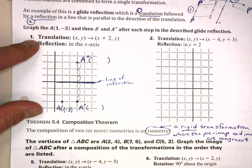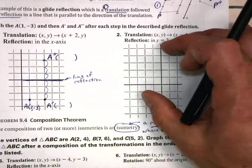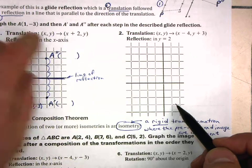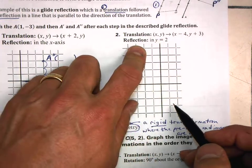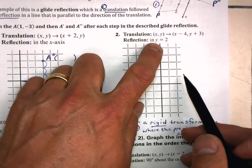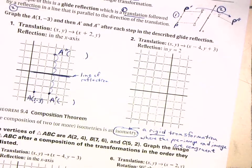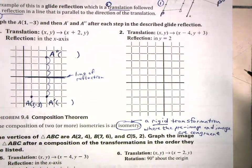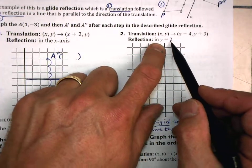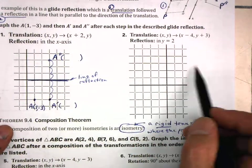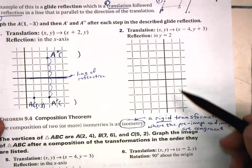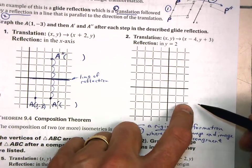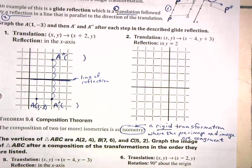That's it for this problem. Do the same type of work for number two. Plot point A at (1, -3), then do this rule of transformation — it's a translation — and then reflect that A' in the line Y equals two. Do you remember what Y equals two looks like? You need to pull out that half sheet of paper with the four different lines of reflection. Remember, Y equals two is a horizontal line. Draw your line of reflection, reflect A' over that line to get A double prime, and give me the coordinates for A, A', and A double prime. Go ahead and pause the video and do that now.